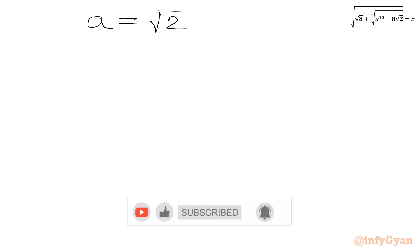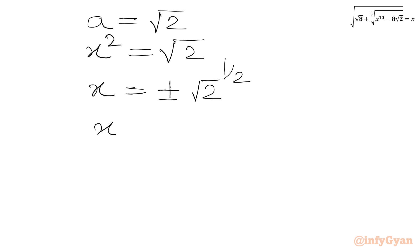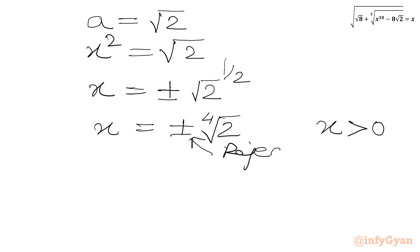Recall that A = x², so x² = √2. Taking the square root of both sides: x = ±(√2)^(1/2) = ± ⁴√2. Since our restriction was x > 0, we reject the negative value. The accepted solution is x = ⁴√2.